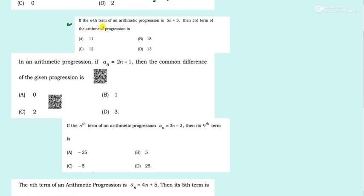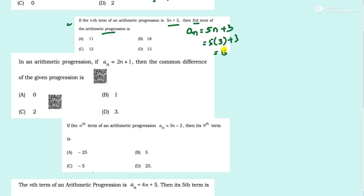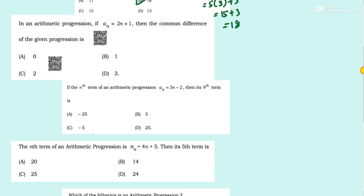Question 2: If the nth term of an AP is a_n = 5n + 3, then the third term is dash. Just put 3 in place of n: 5 times 3 is 15, plus 3 is 18. So the answer is 18.